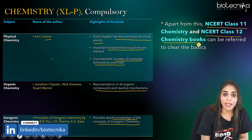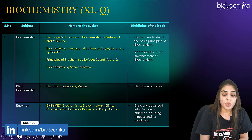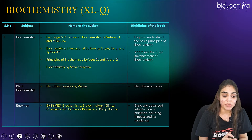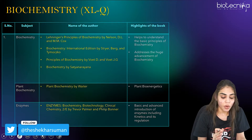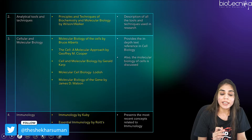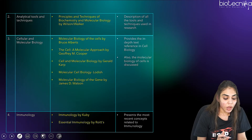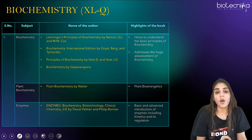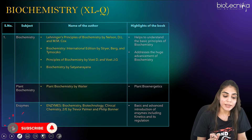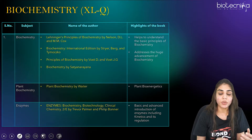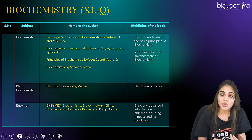Coming to the next section, that is the biology section. First we'll see the reference books for biochemistry, which is Section Q. The biochemistry section consists of biochemistry syllabus, analytical tools and techniques, cellular and microbiology, as well as immunology. We'll see reference books for all these sections. Starting with biochemistry, which includes biochemistry, plant biochemistry, and the enzyme part.